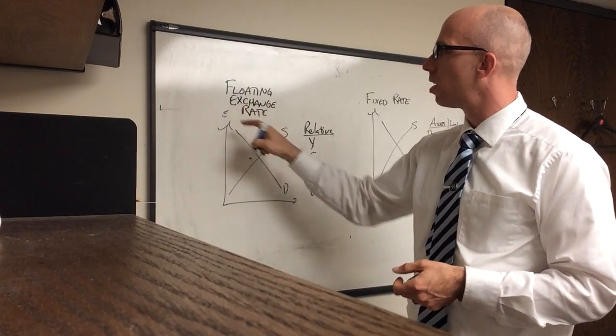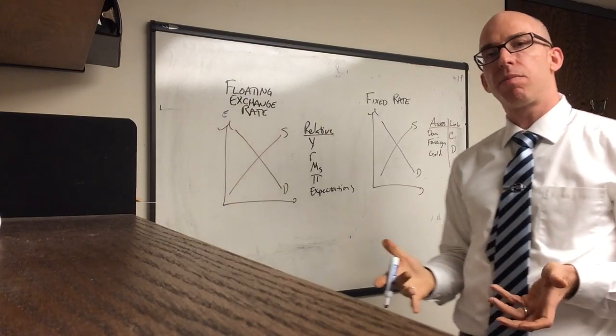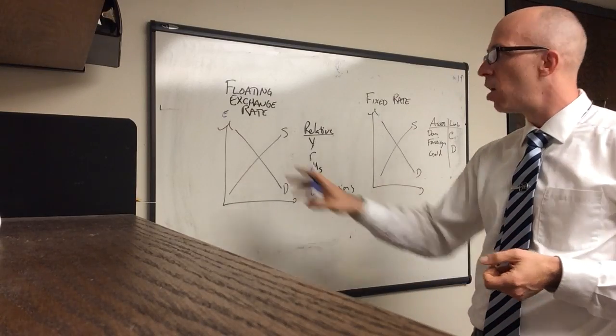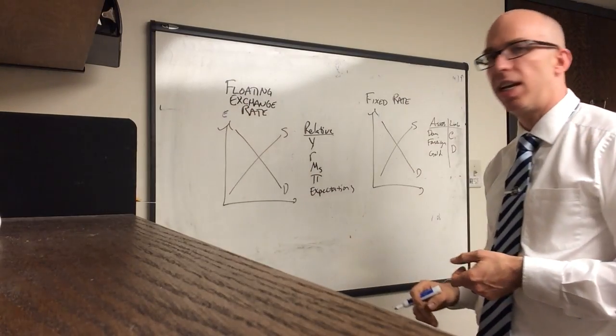Now usually I have E for the exchange rate where up is an appreciation and down is a depreciation. So this can be market for the dollar where up is a strengthening or appreciating dollar.